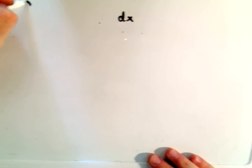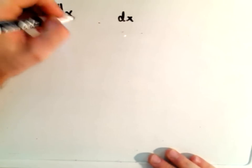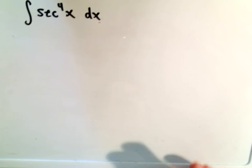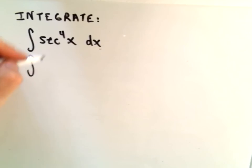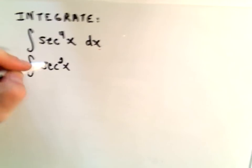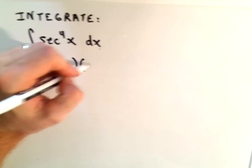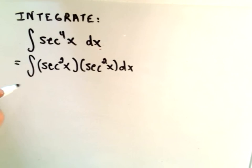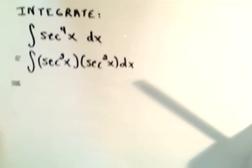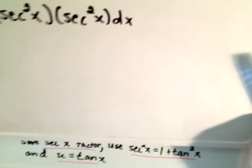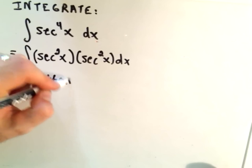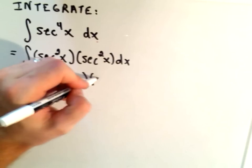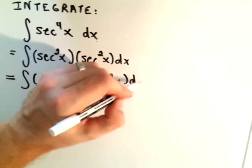Suppose it was just secant to the fourth. Okay, well, I guess this one maybe doesn't exactly fit the mold in the sense that it's not a power of secant times a power of tangent, but it is an even power of secant. So maybe let's just do what we did before and see what happens. So there's my secant squared. I'm going to save my other secant squared.